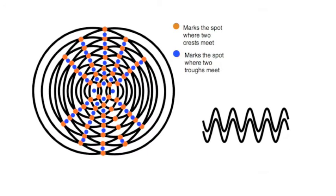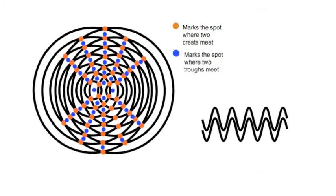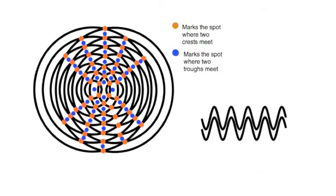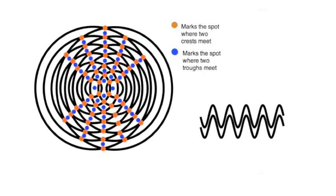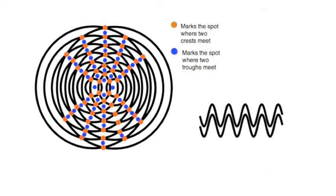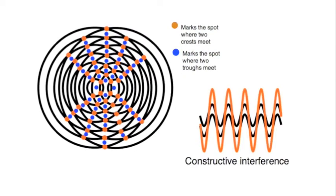These places where crest meets crest, and trough meets trough, form these straight lines. So along that line on the right hand of your screen, one wave meets another, crest meeting crest, and trough meeting trough.